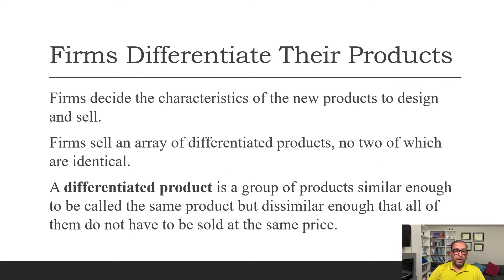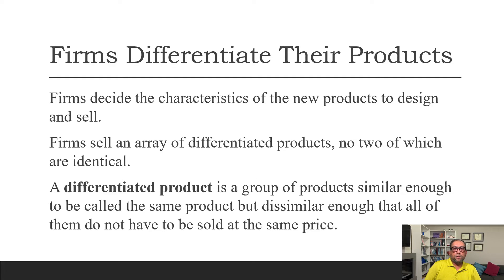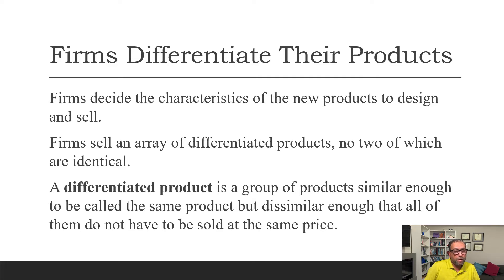Firms decide on the characteristics of a new product to design and sell, and they sell an array of differentiated products, no two of which are identical. For example, Tim Hortons and Starbucks both sell coffee, but charge different prices because each considers its coffee different from the other's. Customers with a strong preference for one product will pay a higher price for it. A differentiated product is a group of products similar enough to be called the same product but dissimilar enough that they don't all have to be sold at the same price.